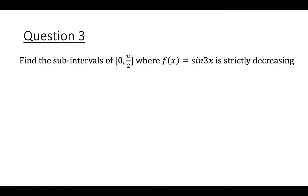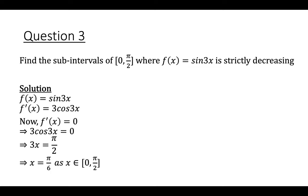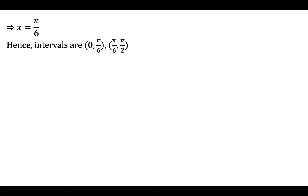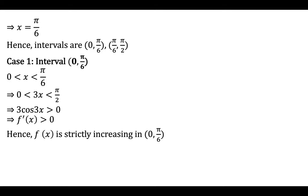Question number 3, f of x equal to sin 3x, find the sub-intervals of 0 to pi by 2 where f of x is strictly decreasing. f dash x equal to 3 cos 3x. Put f dash x equal to 0, so 3 cos 3x equal to 0, giving 3x equal to pi by 2 and x equal to pi by 6. Since x belongs to 0 to pi by 2, the intervals are 0 to pi by 6 and pi by 6 to pi by 2. When x lies in 0 to pi by 6, 3x lies from 0 to pi by 2, so 3 cos 3x greater than 0, meaning f of x is strictly increasing in 0 to pi by 6.